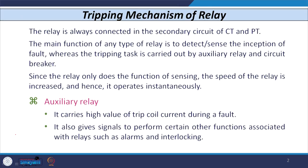Today we will discuss the basic tripping mechanism of the relay. We know that relay is always connected either on the secondary of CT or secondary of PT — we may use either CT or PT or both. The main function of relay is to just detect or sense the inception of fault, whereas the tripping task — isolation of the faulted part or section — is done by auxiliary relay or circuit breaker. Since the relay only senses or detects the fault, its speed increases and some relays may operate instantaneously depending upon the magnitude of fault current.